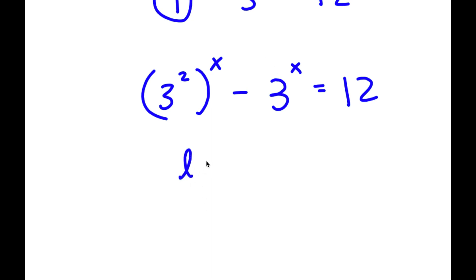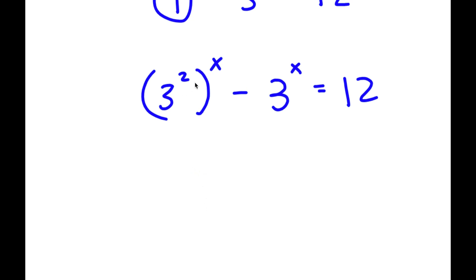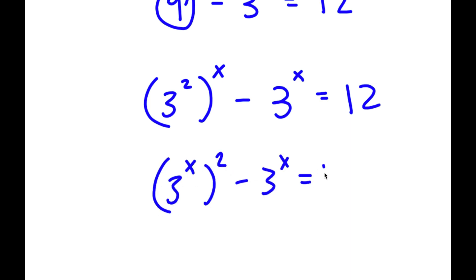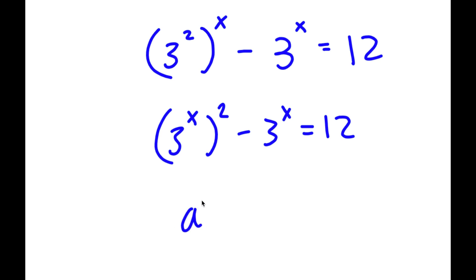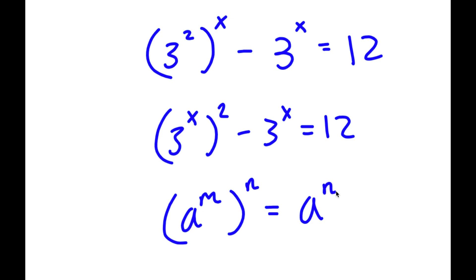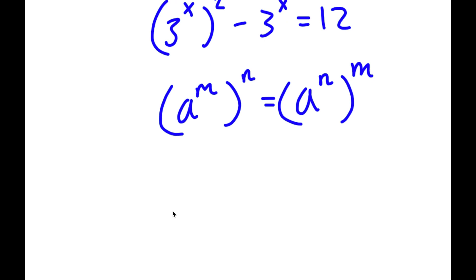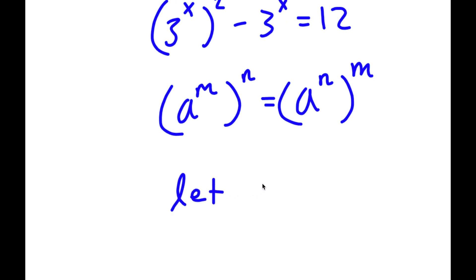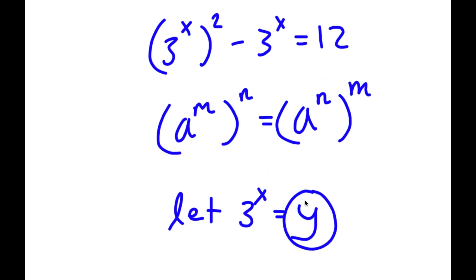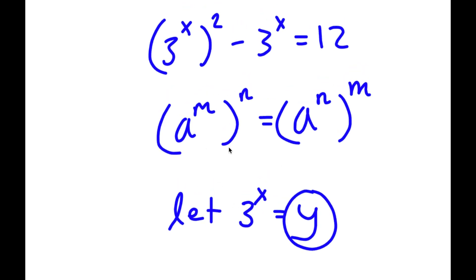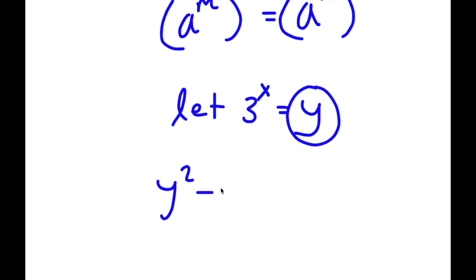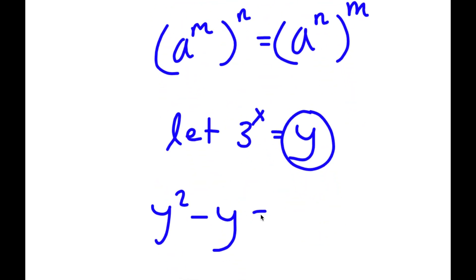I'm going to rewrite 3 to the power of 2 to the power of x as 3 to the power of x to the power of 2, because if I have something in the form a to the power of m to the power of n, this is also equal to a to the power of n to the power of m. So now I'm going to let 3 to the power of x equal to the variable y. Substituting in y, I get y squared minus y is equal to 12.